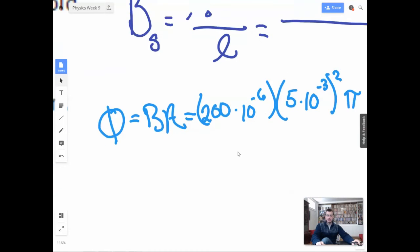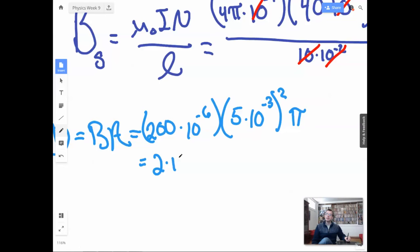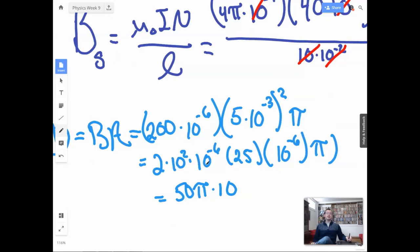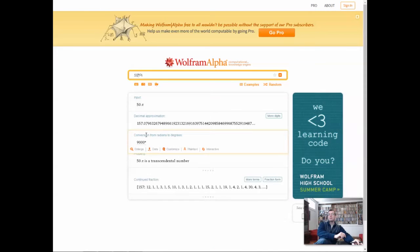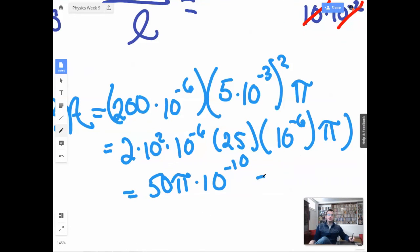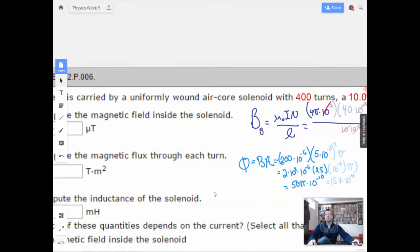So now I'm going to simplify this slightly. So we're going to have 2 times 10 squared times 10 to the negative 6. 5 squared is 25, 10 to the negative 6. So 50 pi times 10. We have 10 to the negative 6, 10 to the negative 12, 10 to the negative 10th. So negative 6 minus 6 is negative 12. Negative 12 plus 2 is negative 10. So I'm going to do 50 pi. 157.